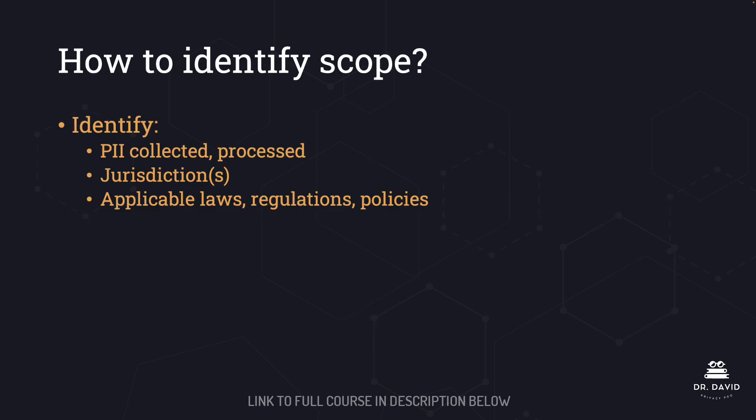So how do we identify the scope for our privacy program? What are we responsible for? There are three things we need to identify. First and foremost, what PII or personal data does our organization collect and process? Number two, what jurisdiction or jurisdictions does our organization fall under? And finally, number three, what are the applicable laws, regulations, and policies? For example, if I am a healthcare organization that operates only in the United States, then one of the laws I'm going to need to comply with is HIPAA.